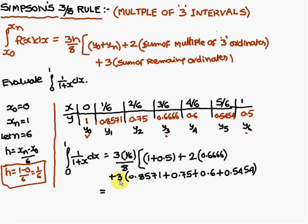Next, 3 times the remaining ordinates, 3 times the remaining ordinates. So this is over and this is over and this is over, therefore, you come across y1, y2, y4, y5. So, you substitute here, if you simplify this one, you are going to get it as 0.6932.